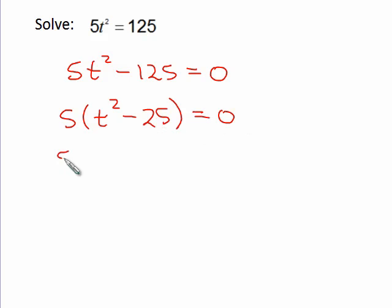Now I have a difference of squares, which must factor to be conjugates. I'll have t squared will be t times t, and 25 will be 5 times 5.